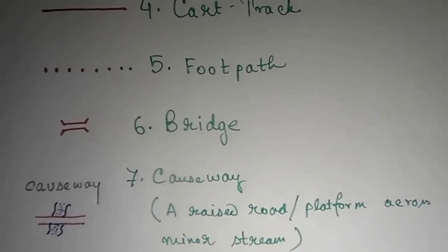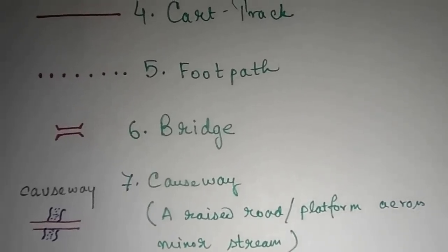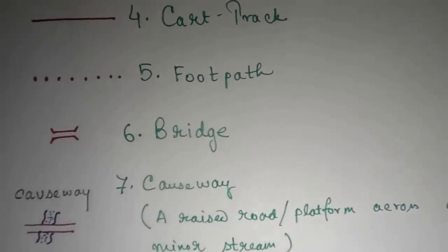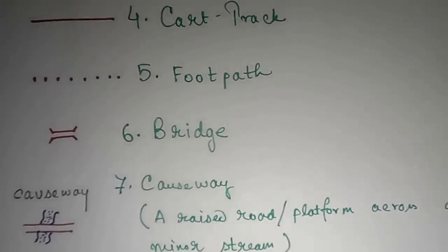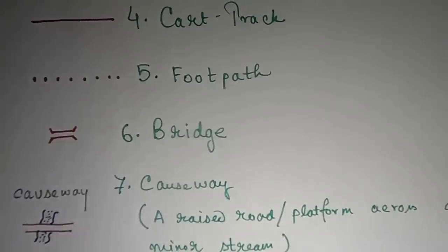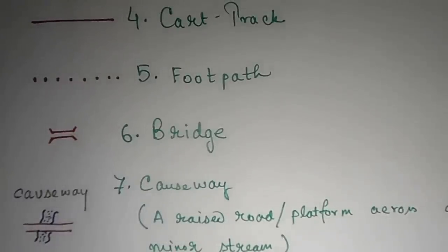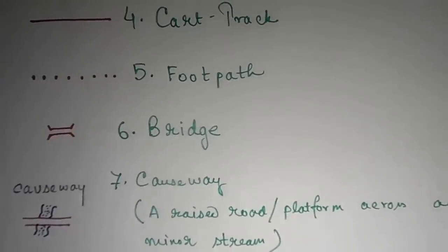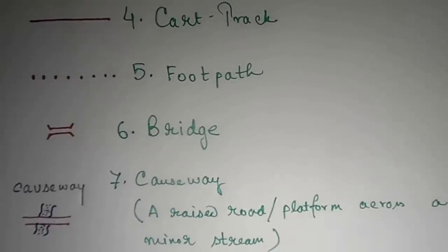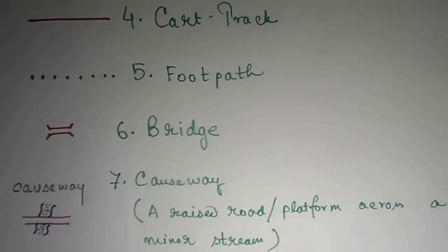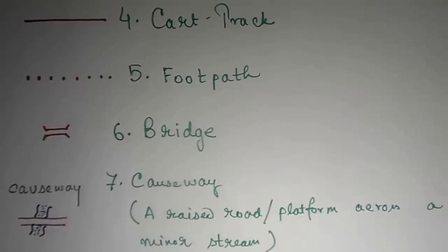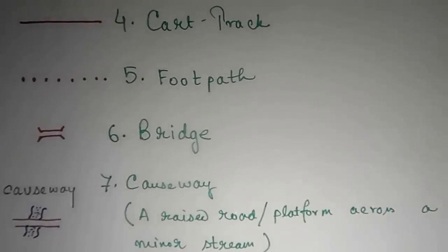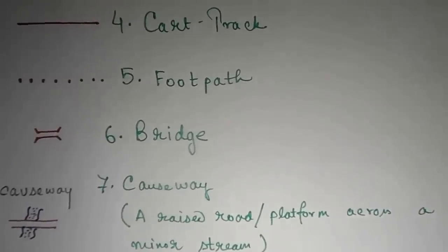Number six is a bridge — a basic symbol for a bridge. Number seven is a causeway, represented by the symbol with 'causeway' written over it. A causeway means a raised road or platform across a minor stream.